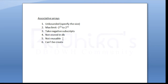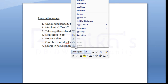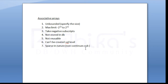The sixth point is that associative arrays cannot be created at the schema level. The seventh point is that associative arrays are sparse in nature, which means they have non-continuous subscripts — the subscript indices do not need to be sequential or continuous.